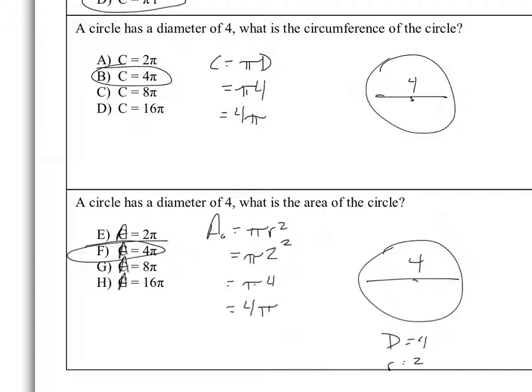That's not going to be the case always. In fact, this is pretty much the only number where it will be the same, because this is the only time where the radius squared — 2 squared — is going to be the same thing as 2 times the radius, which is the diameter. All right, let's flip over and look at our aim for today.